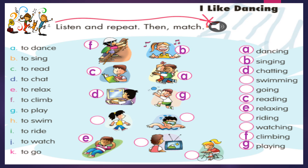We continue. Letter H: to swim, nadar — swimming. Excellent. Swimming, nadando. Y también hemos unido con la imagen donde vemos al niño que está nadando. We continue. Letter I: to ride, montar — riding. Excellent. Riding, montando. Y también hemos unido con la imagen donde vemos a la niña que está montando su bicicleta. Riding, montando.